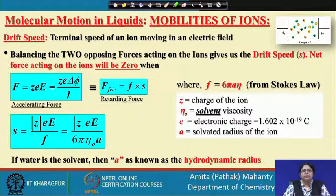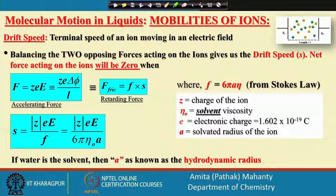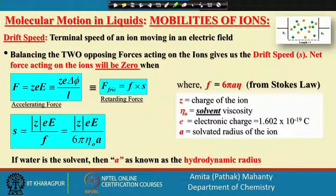In the last class what we talked about was the drift speed. The drift speed is the speed which the ions are going to acquire — the ultimate speed when the forces on the ions are balanced. What are the forces acting on the ions? One is the accelerating force and another is a retarding force. When these two forces balance, we apply Stokes law and derive an expression for the terminal speed, or the uniform speed, which the particles or ions are going to move with.